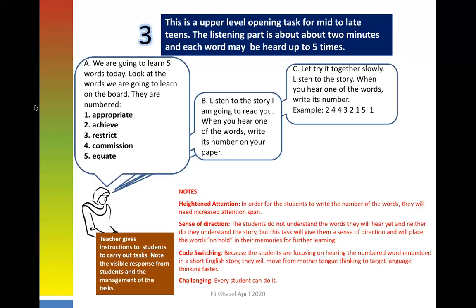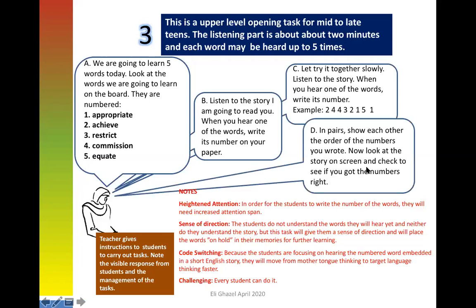You might assign numbers like: 'appropriate' is five, 'equate' is one, 'restrict' is two. Notice that the attention of the listener is heightened even more. If words appear in sequence you only need to go down the line, but if the numbers in front of the words are jumbled, it takes more heightened attention because it's more challenging. At the end, always ask students in pairs to show each other the order of numbers they wrote.